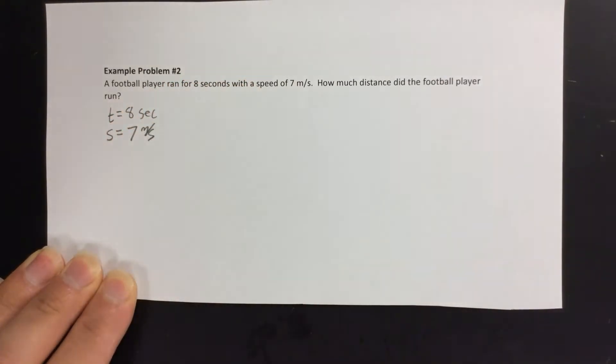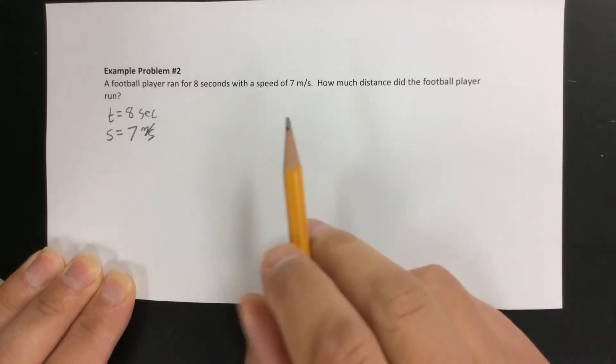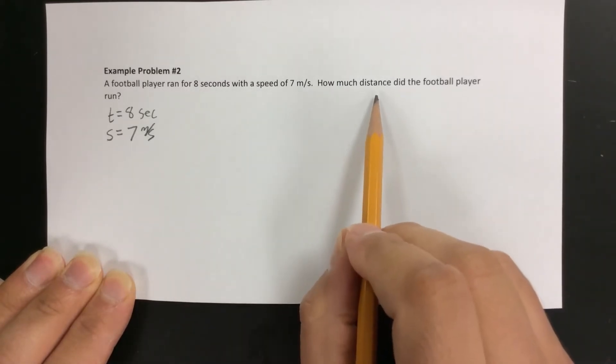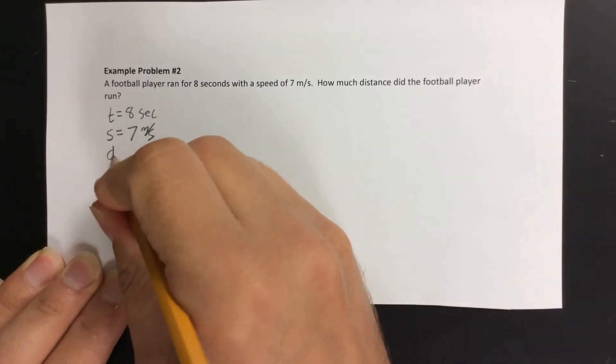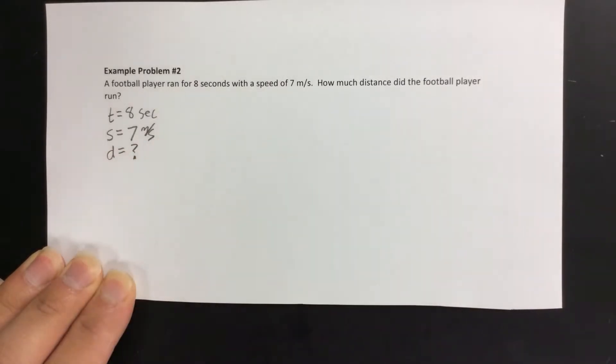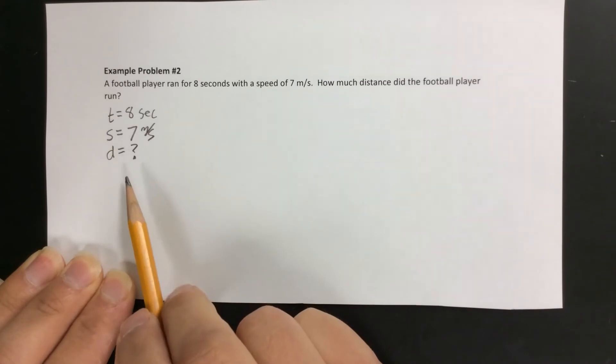Be very careful - sometimes students confuse time and speed. Time is measured in seconds, and speed is measured in meters per second or miles per hour. Time and speed are not the same. Finally, it asks us how much distance he ran. Distance is represented by the letter D. So that's the first step: listing what we know.